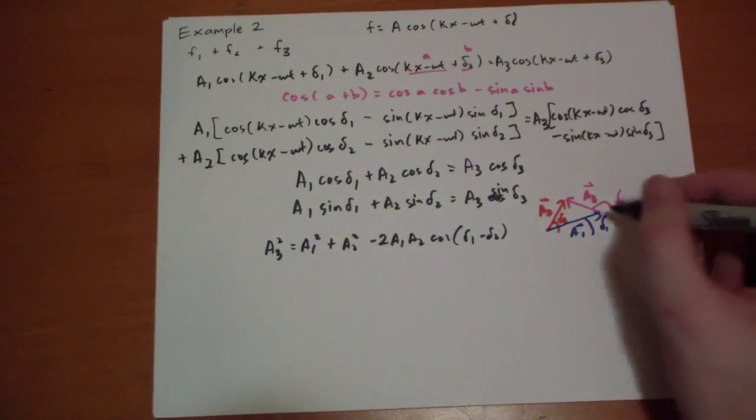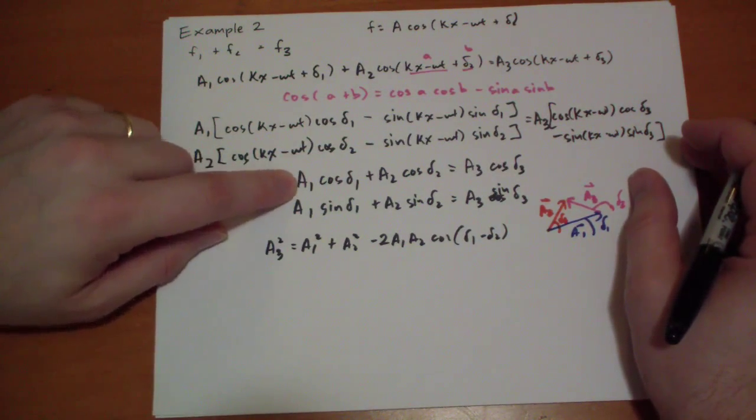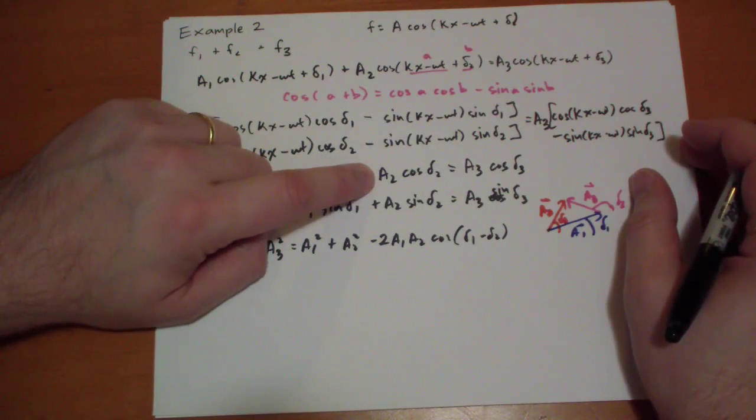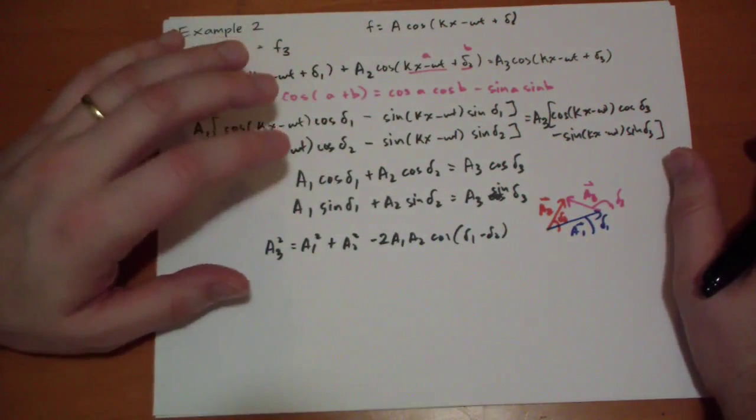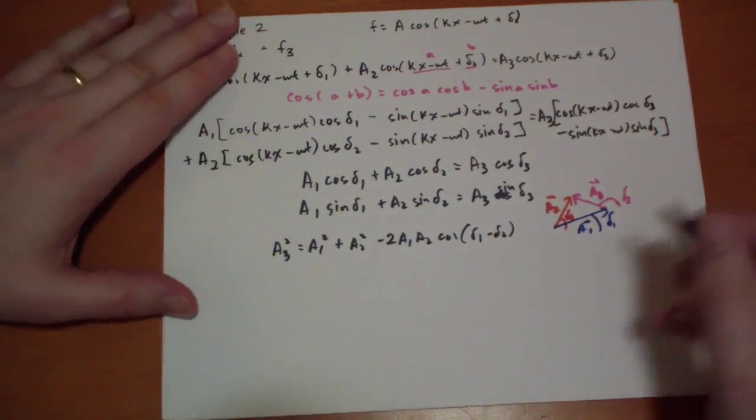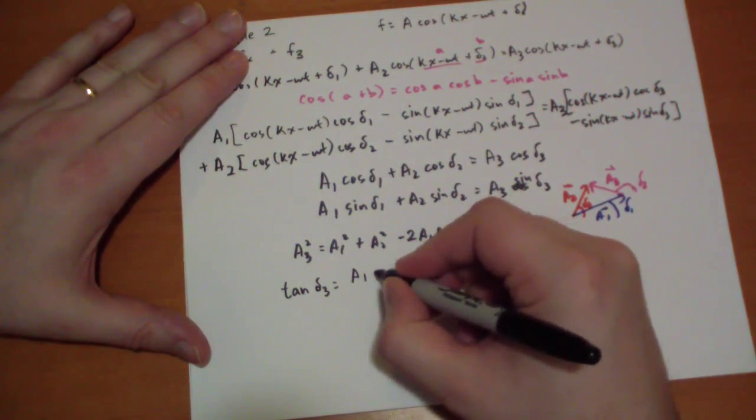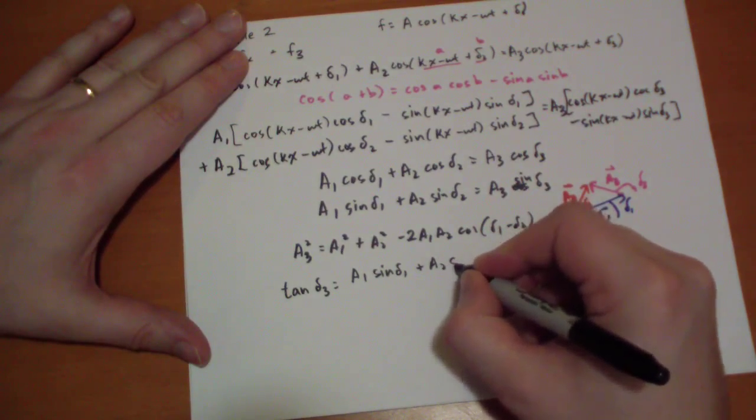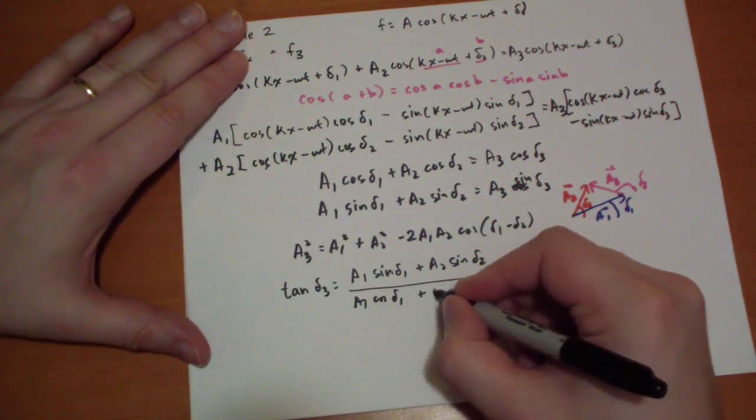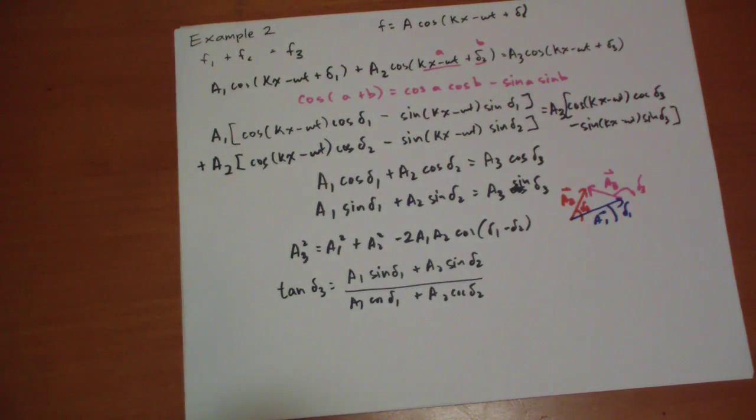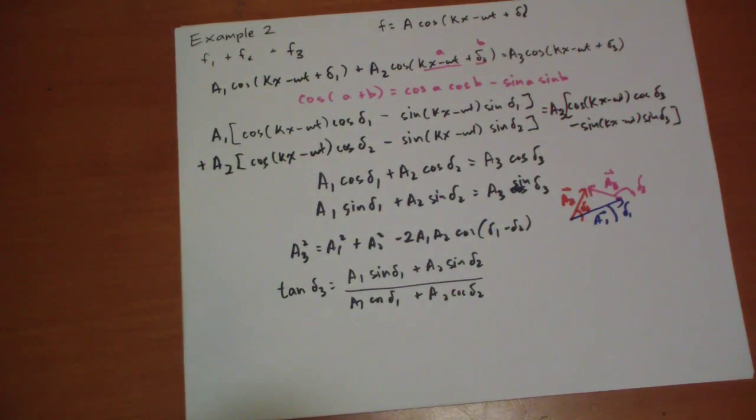How do you get the angle? Well, A1 cosine delta 1 is the x component of the A1 vector and A2 cosine delta 2 is the x component of the A2 vector. This is the y component, that's the y component. So sine over cosine of that angle, you take these guys and divide them by these guys. So you're gonna get tan delta 3 is equal to A1 sine delta 1 plus A2 sine delta 2 divided by A1 cosine delta 1 plus A2 cosine delta 2. Of course you have to take the square root to find the absolute magnitude and you take the arc tan.